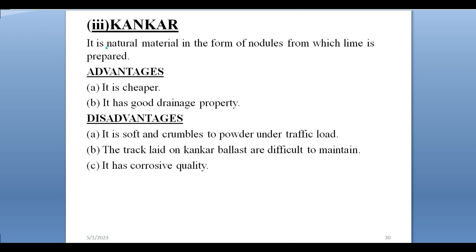Kankar. It is a natural material in the form of nodules from which lime is prepared. Advantages: It is cheaper and has good drainage property. Disadvantages: It is soft and crumbles to powder under traffic loads. The track laid on kankar ballast is difficult to maintain. It has corrosive quality.